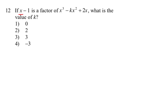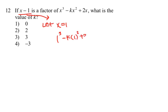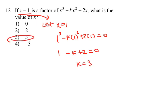Number twelve: x minus 1 is a factor — what does that mean? By using the remainder theorem, I can plug in x equal to 1 and set it equal to 0. So we get 1 cubed minus k times 1 squared plus 2 times 1 equal to 0, which gives 1 minus k plus 2 equal to 0, so k equals 3. Therefore, choice 3 is the answer.